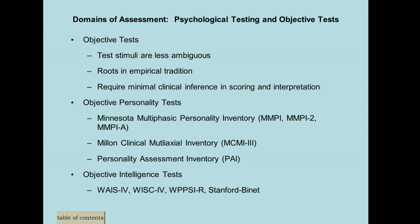The WPPSI — the Wechsler Primary Preschool Scale of Intelligence — is for kids two-and-a-half to five years old. The good thing about the Wechsler tests is that they give you a lot of information about IQ and intellectual ability. The Stanford-Binet has been around a lot longer, but it's long and doesn't give you as much information as the Wechsler tests, so the Wechsler tests are the most common intelligence tool for psychologists.